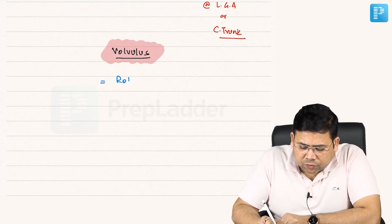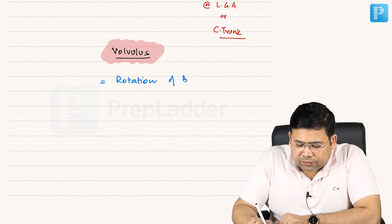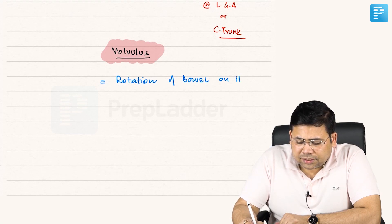Volvulus is defined as rotation of bowel, rotation of bowel on its axis.